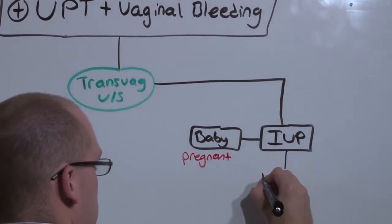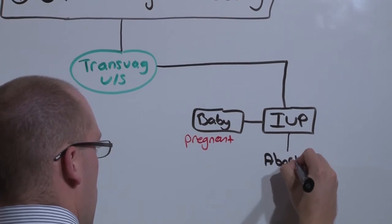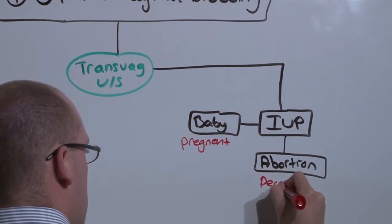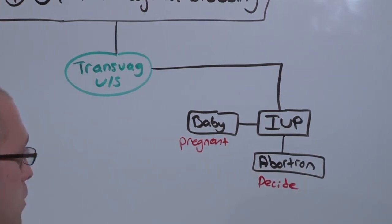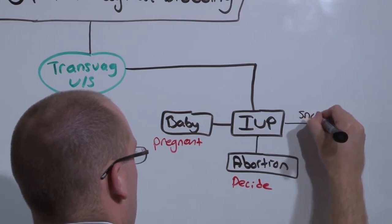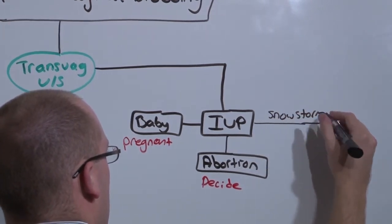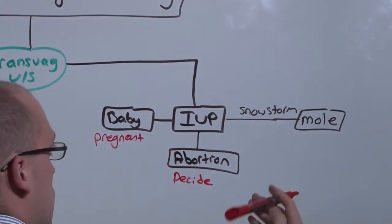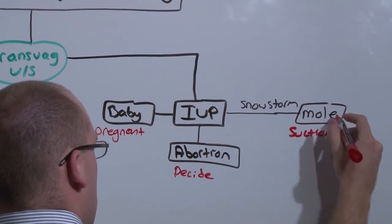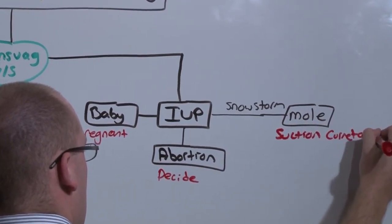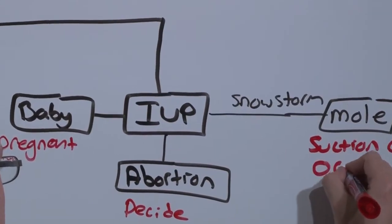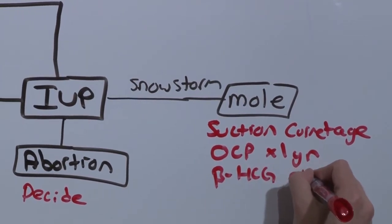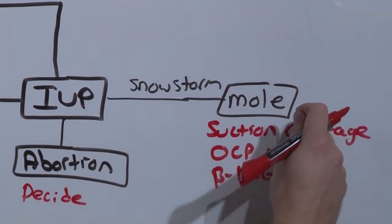See the OB videos. Whether it is an abortion, where you have to decide what to do based on the stage they're in that we just discussed. Or is it a mole? If you see a snowstorm pattern instead of an actual fetus, it's a mole. Moles need to be removed using suction curettage, put on OCPs for a year, and follow up with a beta HCG every week. There's more on this topic in the mole lecture.